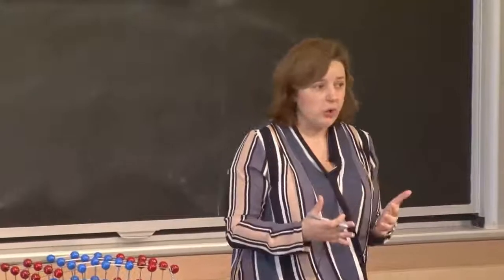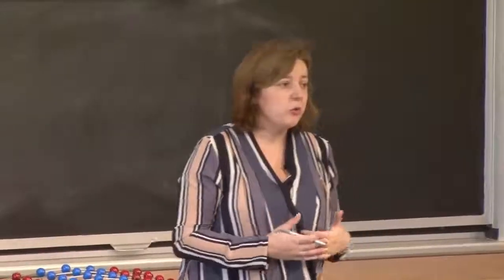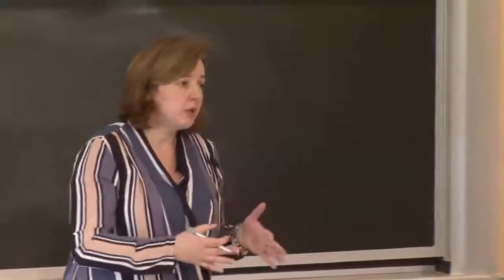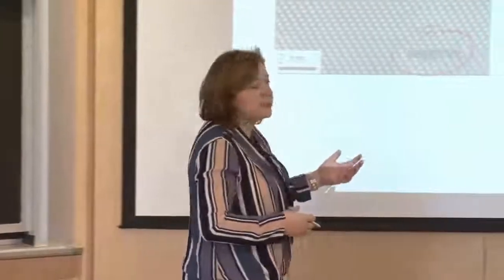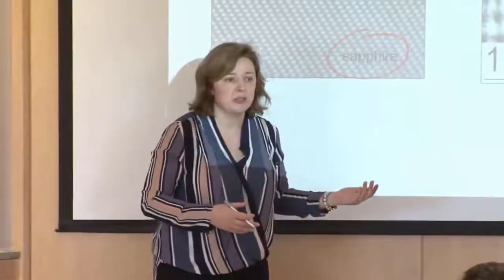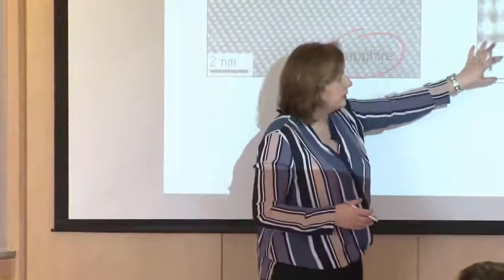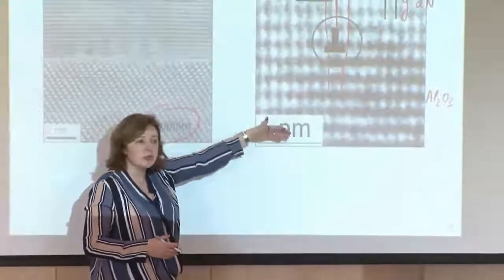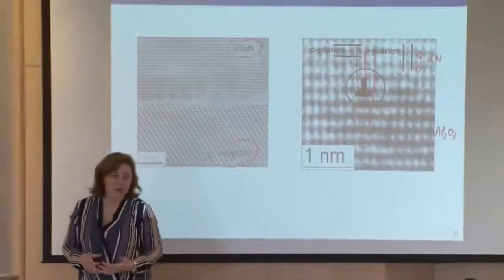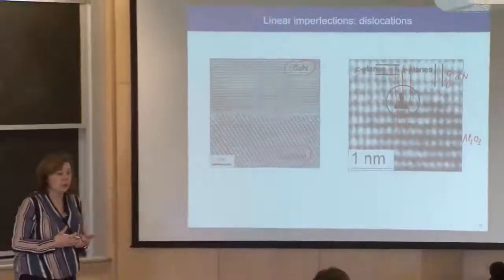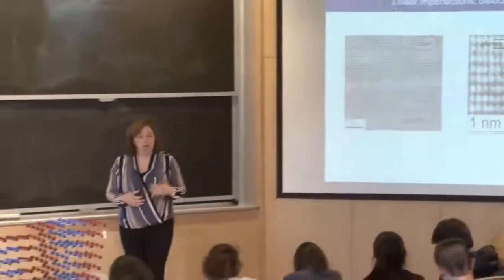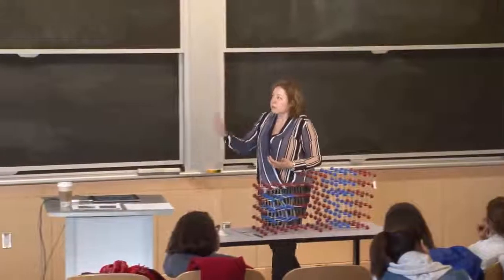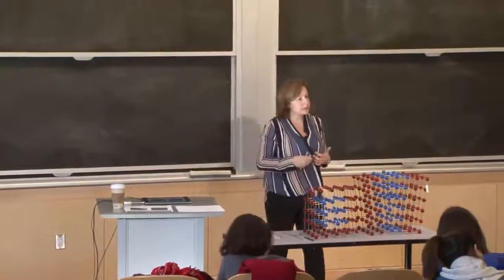This is something you cannot avoid. If you want to grow gallium nitride or any semiconductor free of these dislocations, you have to find a lattice-matched substrate — a crystal as close as possible in lattice parameters to the material you want to grow. Dislocations can be introduced throughout growth due to this property of material growth.